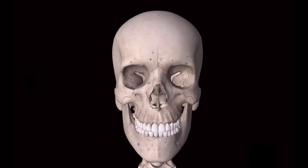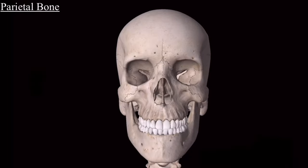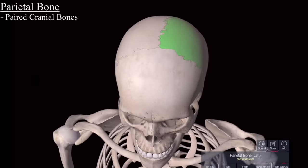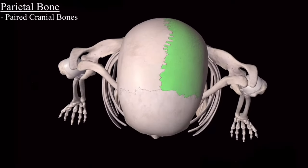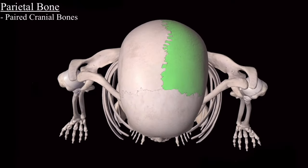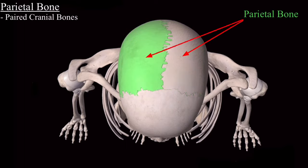In this video I will discuss the parietal bone in detail. Parietal bones are paired cranial bones. In this model, this green is one parietal bone and this is the other parietal bone. Let's isolate one parietal bone.